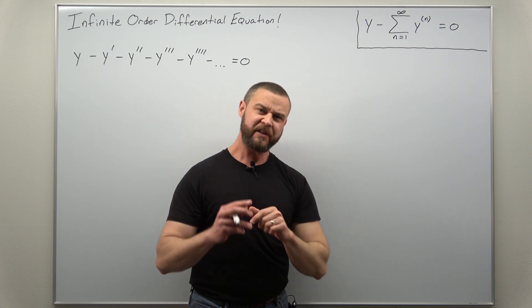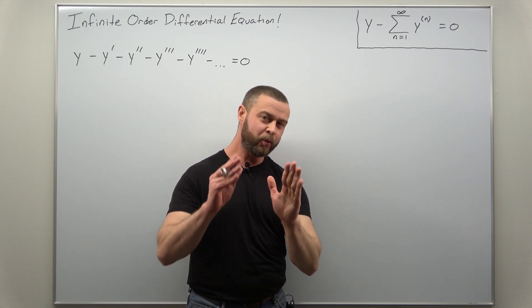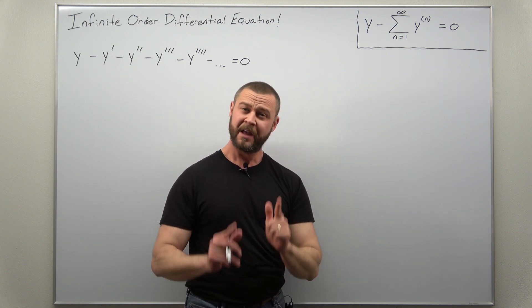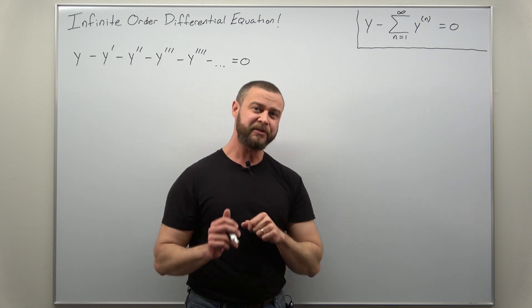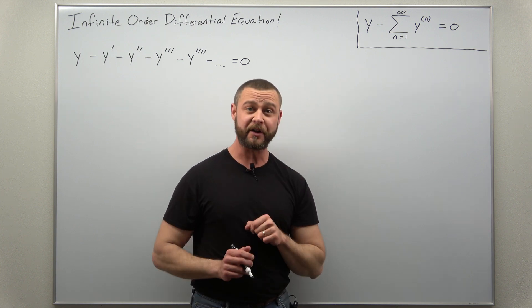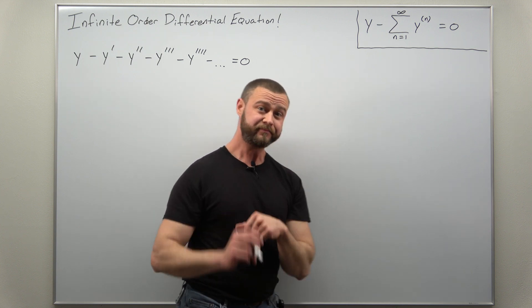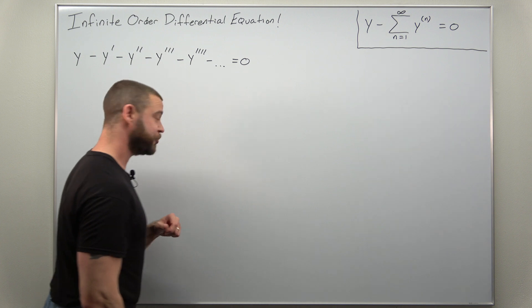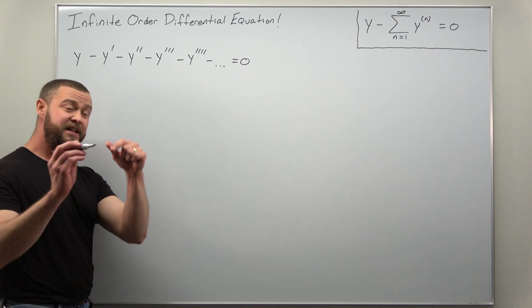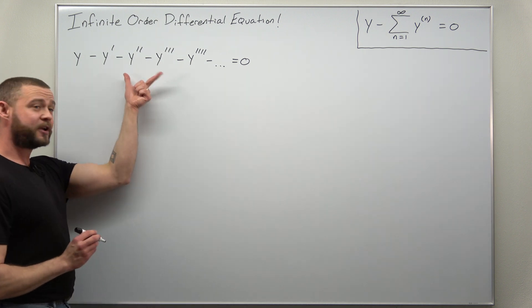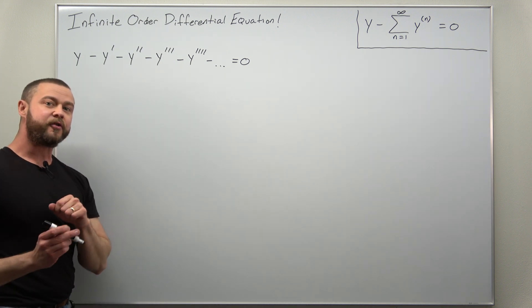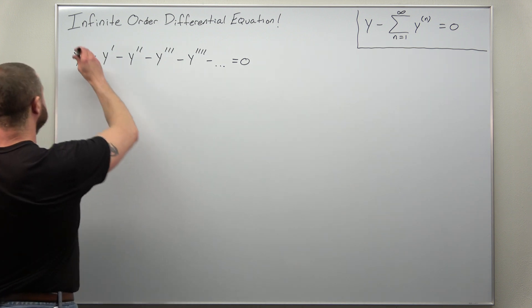This is a peculiar kind of equation, and a lot of times when there are things that are peculiar in mathematics, there's probably a trick. The trick we're going to use to solve this is to take our differential equation and differentiate it.